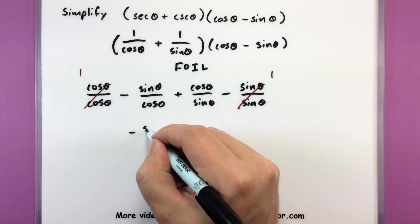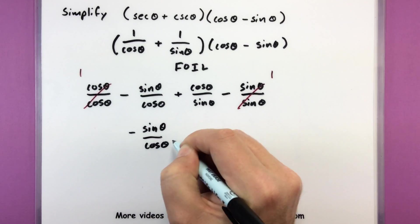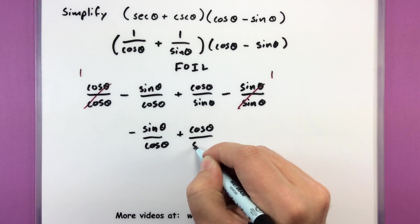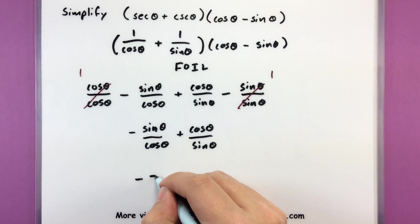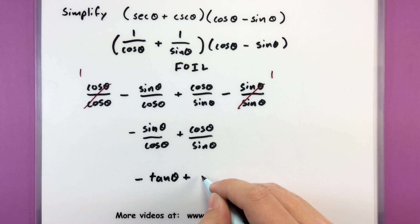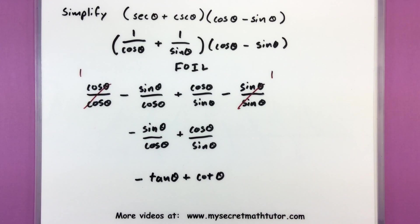So positive 1 minus 1, the ones actually cancel out, and I'm simply left with negative sine of theta over cosine of theta, plus cosine of theta over sine of theta. Now I can write these in terms of their functions: what I have here is negative tangent of theta plus cotangent of theta. And that's nice and simple.